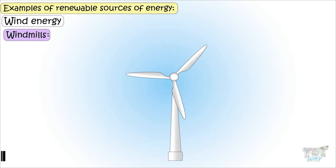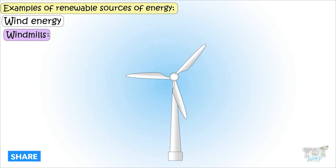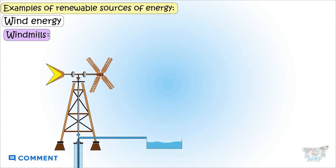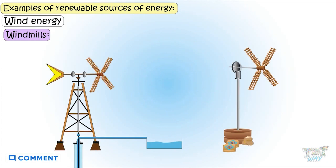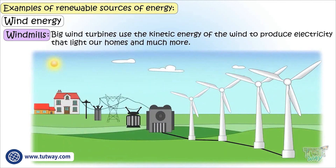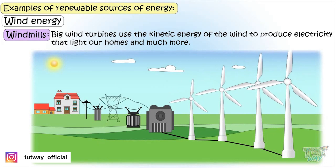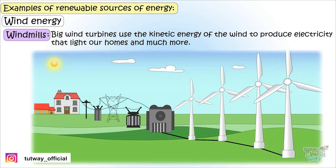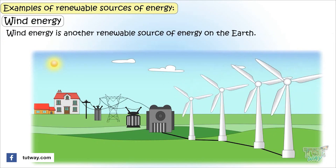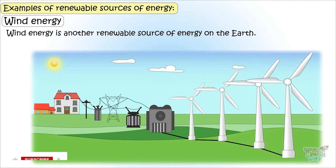A windmill uses the kinetic energy of the wind to pump underground water and to grind grain. Big wind turbines use the kinetic energy of the wind to produce electricity that lights our homes and much more. Wind energy is another renewable source of energy on Earth.